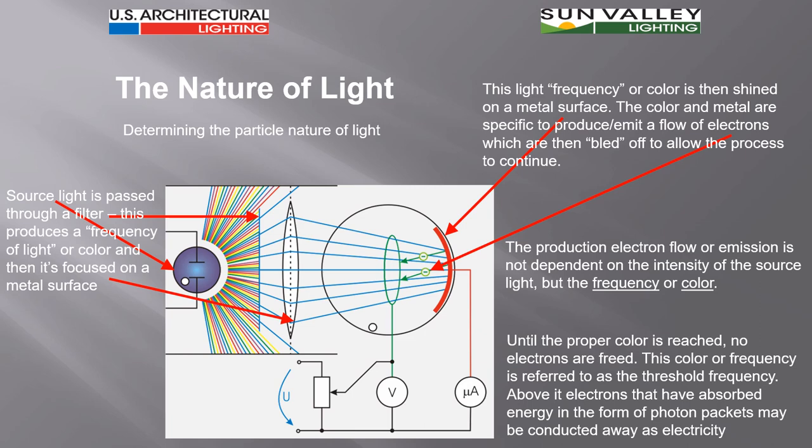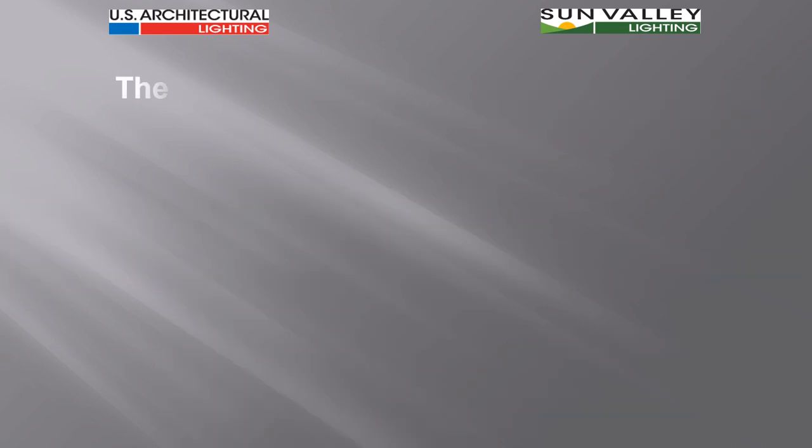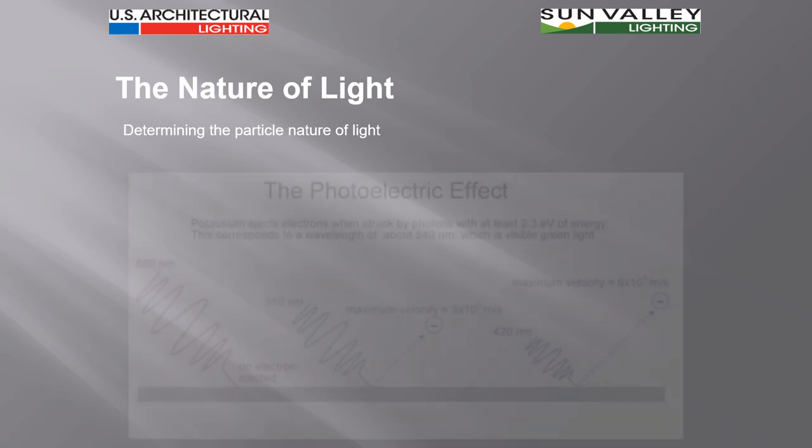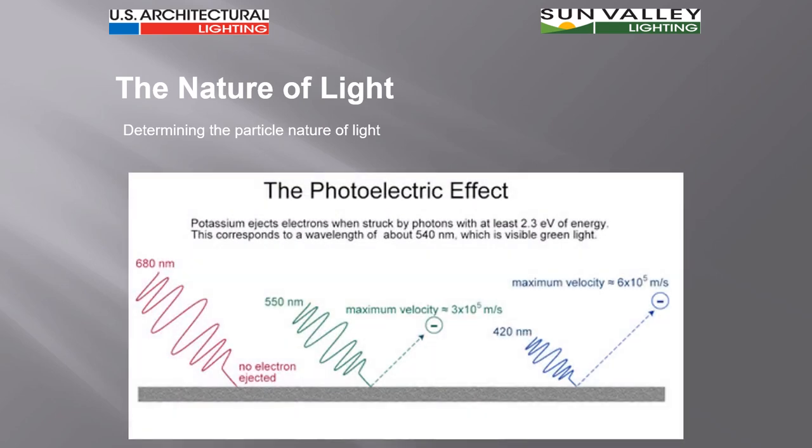Above it, electrons that have absorbed energy in the form of photon packets may be conducted away as electricity. Below it, nothing happens no matter how much the intensity. This process is called the photoelectric effect, and it's basically the concept behind photovoltaic cells.